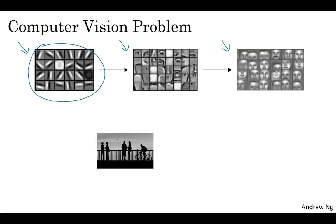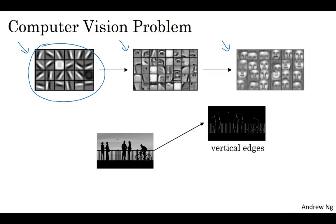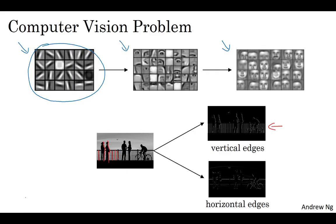Let's take an example. Given a picture like that, for a computer to figure out what are the objects in this picture, the first thing you might do is maybe detect vertical edges in this image. For example, this image has all those vertical lines where the railings are, as well as vertical lines at the outline of these pedestrians, and those get detected in this vertical edge detector output. You might also want to detect horizontal edges — there's a very strong horizontal line where this railing is, and that also gets detected roughly here.